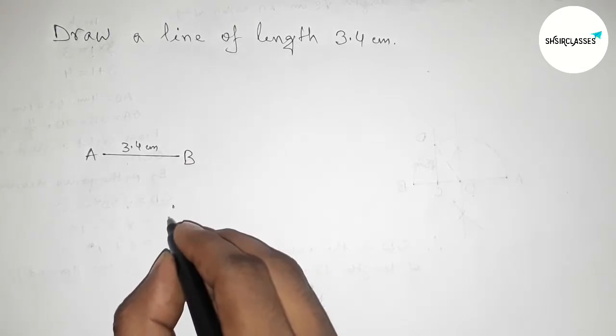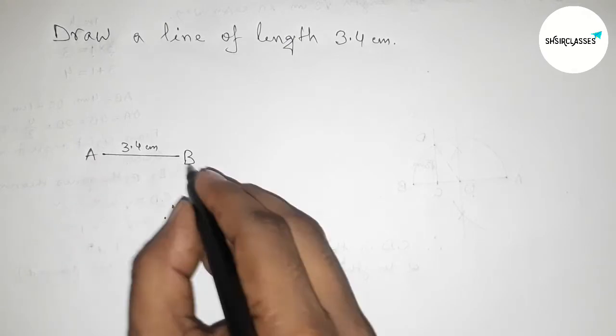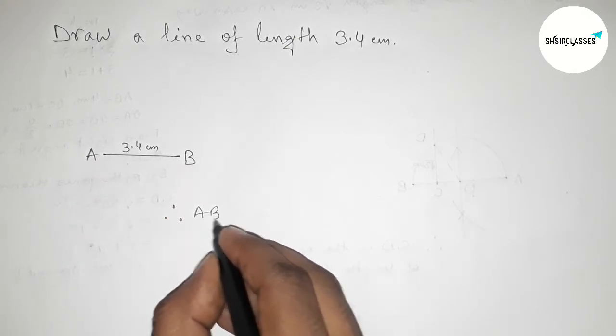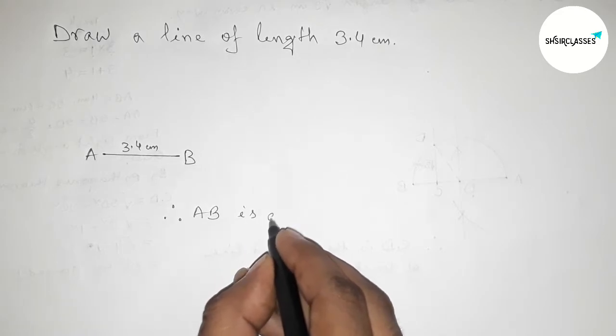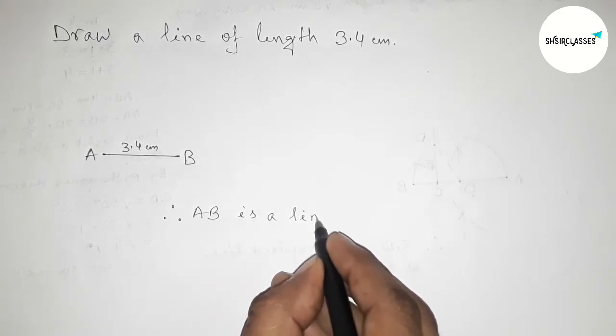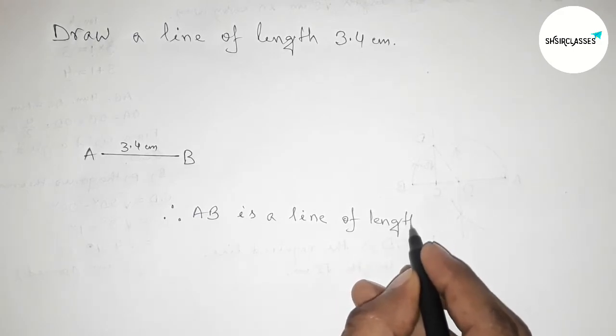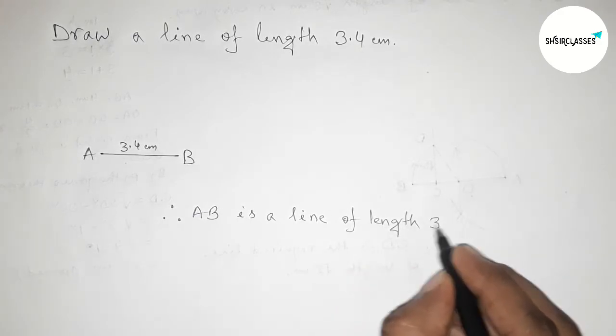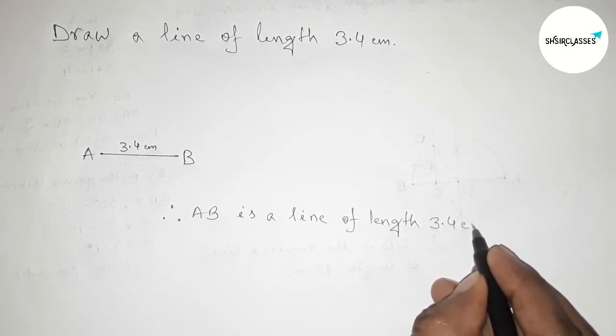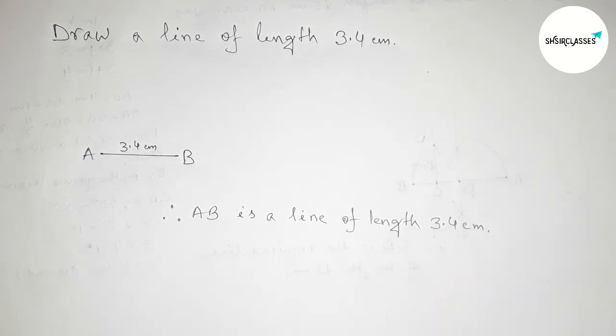So therefore here AB is a line of length 3.4 centimeter. And by this way you can draw a line of length 3.4 centimeter by using scale. So that's all, thanks for watching. If this video is helpful to you, then please share it with your friends.